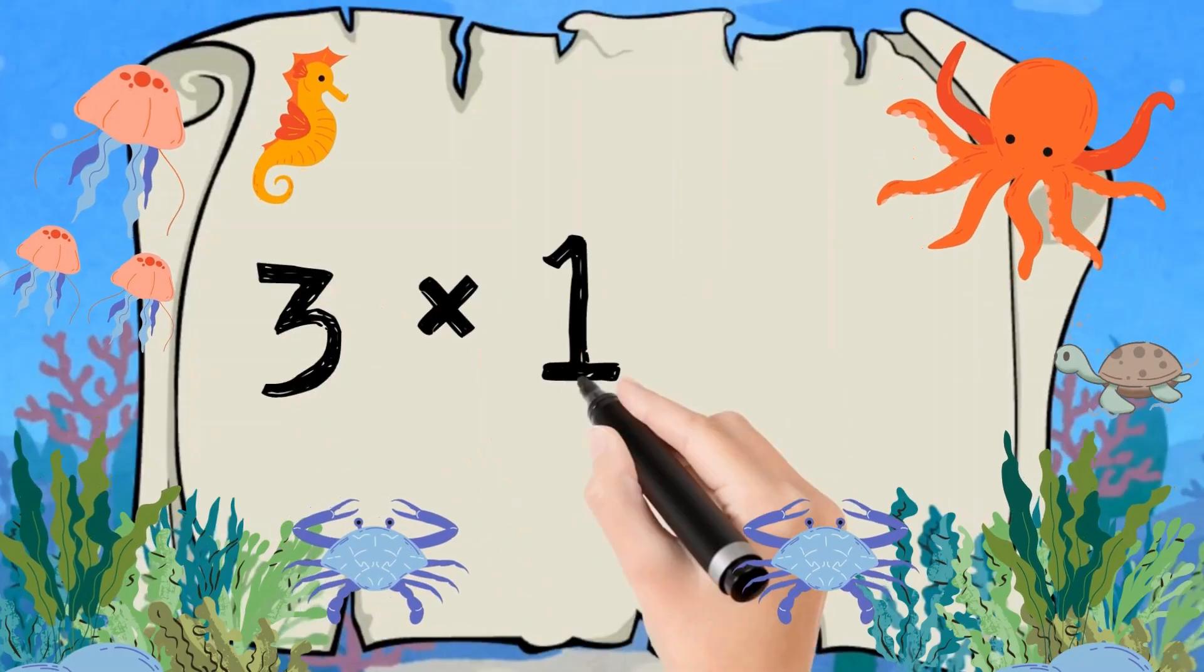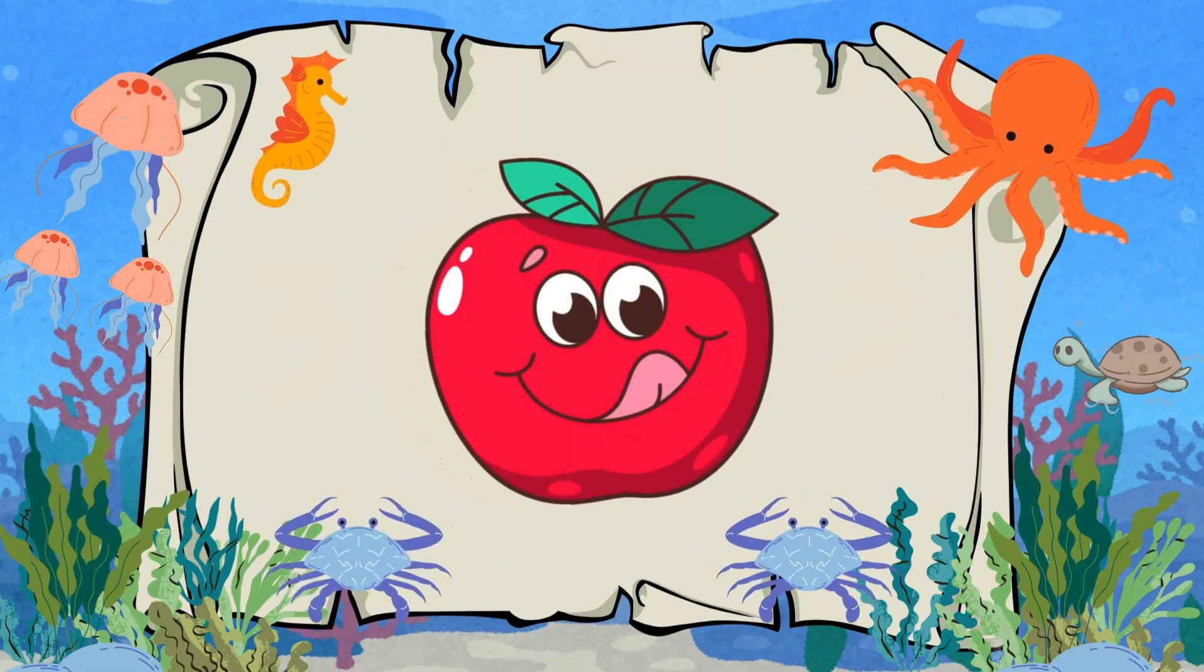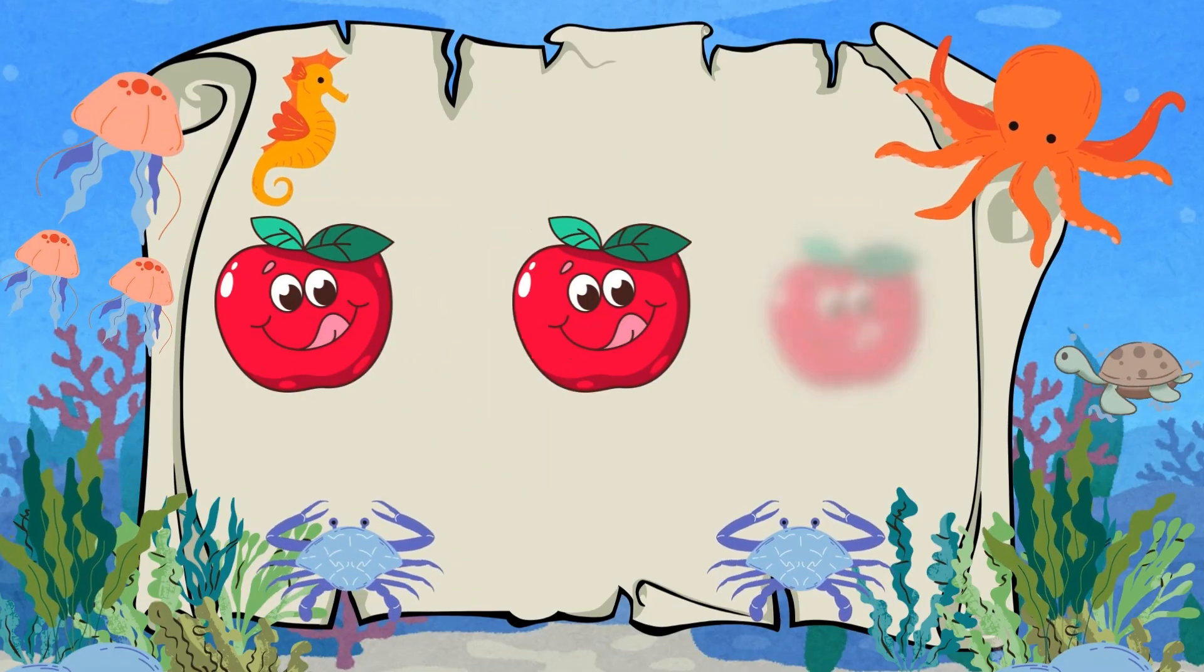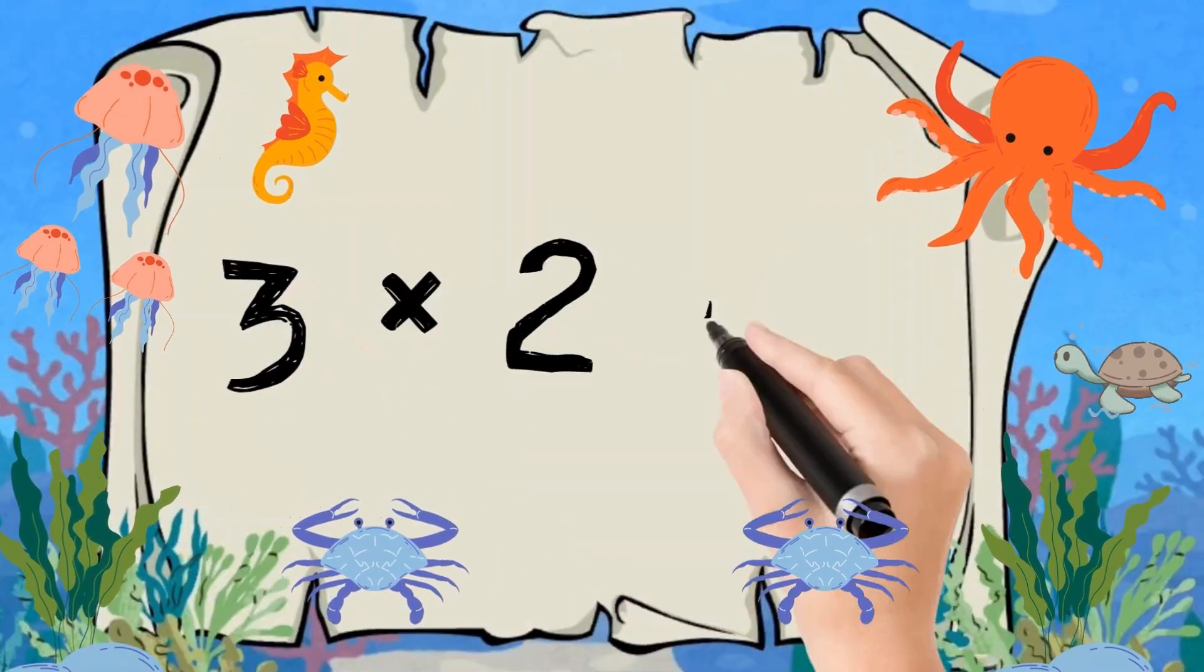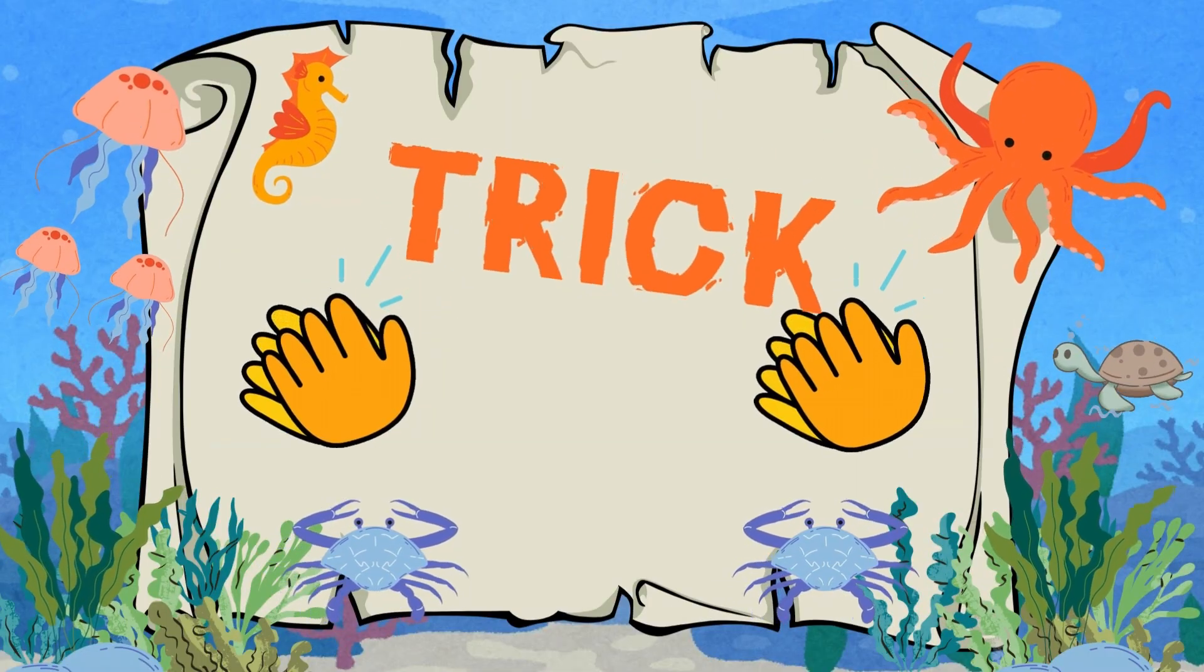Three times one is three. Count the apples: one, two, three. Three times two is six. Clap your hands and